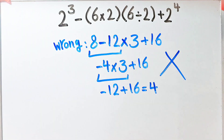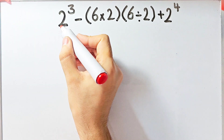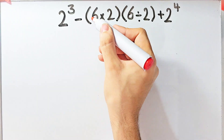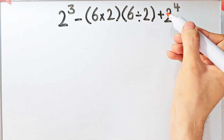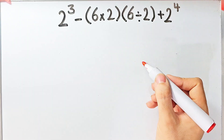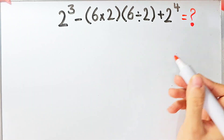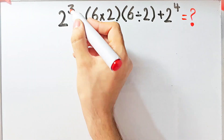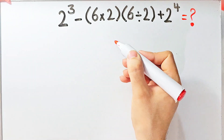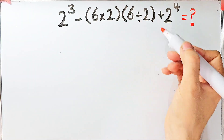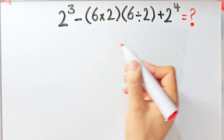Let's solve this question step by step together. The question is: two to the power of three, minus open parenthesis six times two closed parenthesis, then times six divided by two, plus two to the power of four. What is the answer? In this question we have exponents, subtraction, parentheses, multiplication, division, and addition.